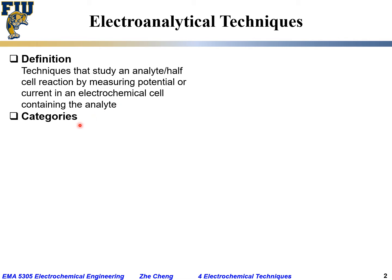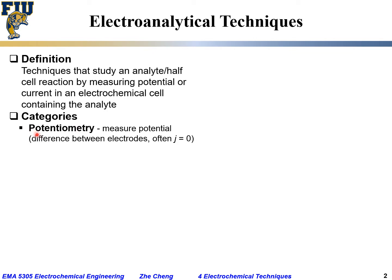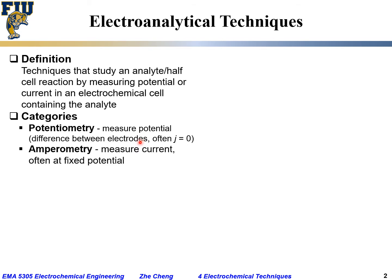There are many categories of electroanalytical techniques or electrochemical methods. The first one is called potentiometry. 'Potential' refers to voltage, and '-metry' means measurement — it measures potential difference between different electrodes. Most often, potentiometry refers to the condition when current or current density equals zero, meaning under equilibrium conditions with no net electrochemical reaction.